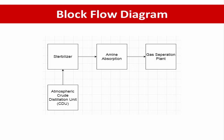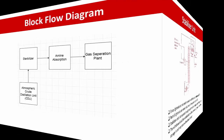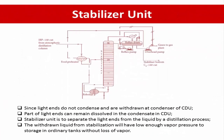The liquid leaving stabilization will have a low enough vapor pressure to be stored in ordinary tanks without vapor loss. The product vapor will be sent to the gas separation plant. The top product from the crude distillation unit (CDU) is a mixture of hydrocarbon gases such as methane, ethane, propane, butane, and naphtha vapor, with an initial boiling point (IBP) lower than 140°C.